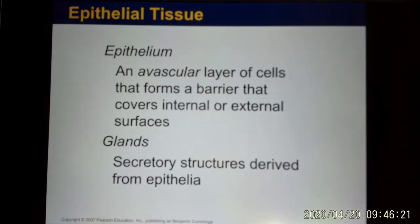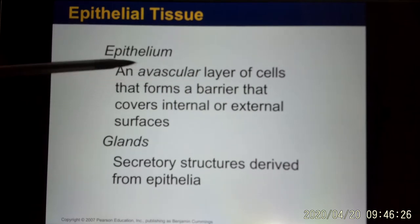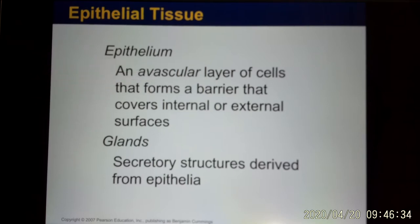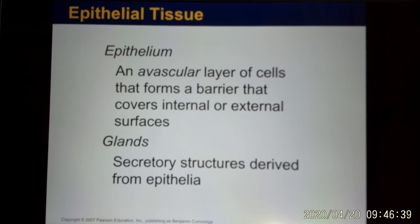The first tissue type is epithelium. Epithelium has avascular layers, meaning they don't have blood vessels — like your skin. You can peel your skin off and you won't bleed. You also have glands, like your sweat glands, and they are part of the epithelium tissue.